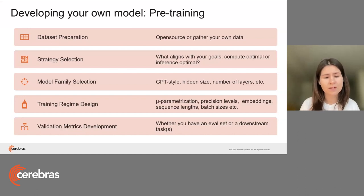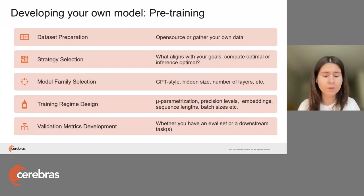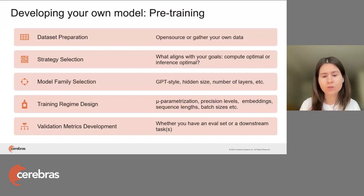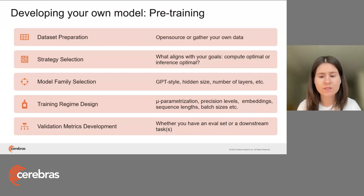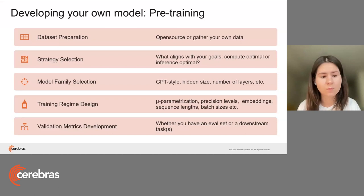ALiBi embeddings are proven to work very well even if you were trained with a small sequence length like 2,000 tokens — increasing that to 10K or 30K still works the best. If you want to check out the ALiBi paper, I highly recommend it. Then we also need to decide what precision level we want to work with, which helps you understand the trade-off between accuracy and training time performance in samples per second. There are different types of precision levels, and you can combine different types together like float32, bfloat16, etc.